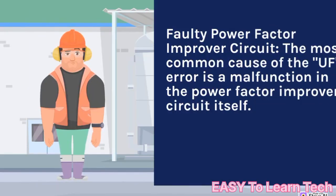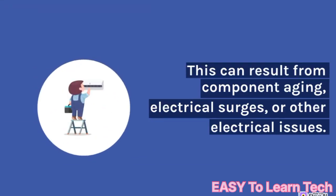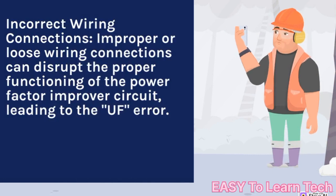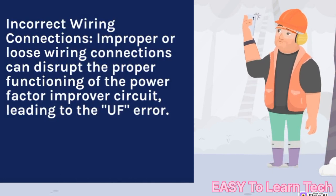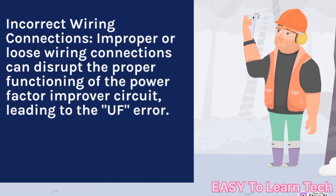Faulty Power Factor Improver Circuit: the most common cause of the UF error is a malfunction in the Power Factor Improver Circuit itself. This can result from component aging, electrical surges, or other electrical issues. Incorrect wiring connections — improper or loose wiring connections can disrupt the proper functioning of the Power Factor Improver Circuit, leading to the UF error.